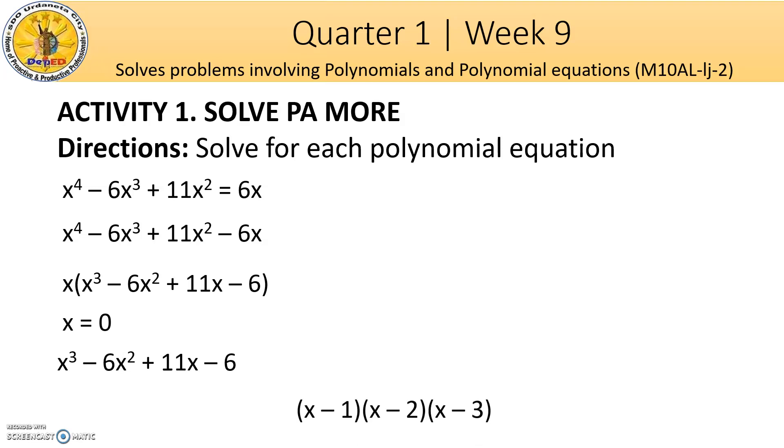When you do that, you'll get the factors, which are x - 1, x - 2, x - 3. So we now have the values of x, which is x = 0, x = 1, x = 2, and x = 3.